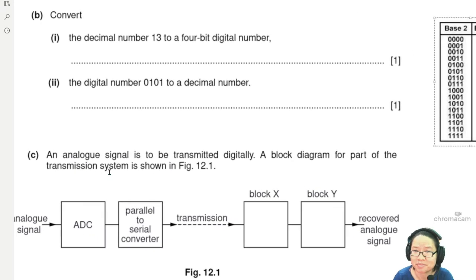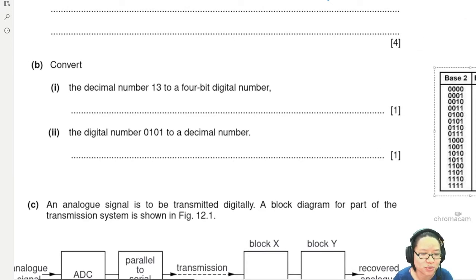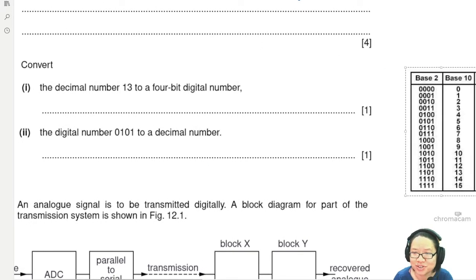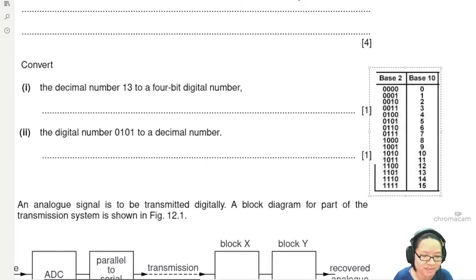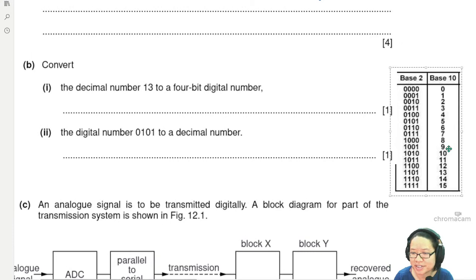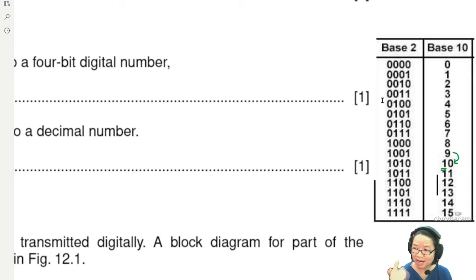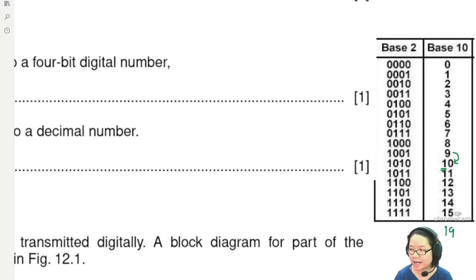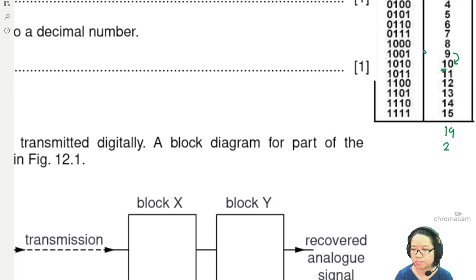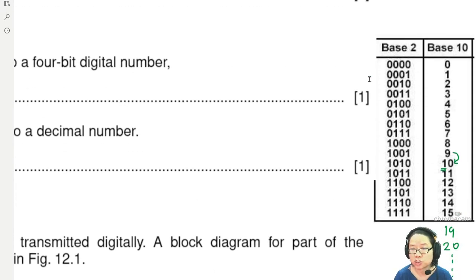The binary number system works as if you're an alien with two fingers — you can only count to two. In base 10, you change over at nine because we have ten fingers. In binary (base 2), you change over at one. So after 1 comes 10, then 11, then 100.